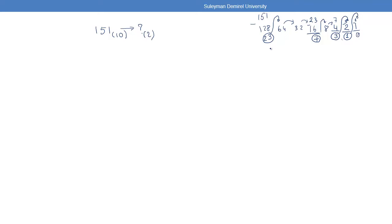Place 1s where subtractions were made: bit 8 (128)=1, bit 7 (64)=0, bit 6 (32)=0, bit 5 (16)=1, bit 4 (8)=0, bit 3 (4)=1, bit 2 (2)=1, bit 1 (1)=1. So 10010111 in binary should equal 151 in decimal.